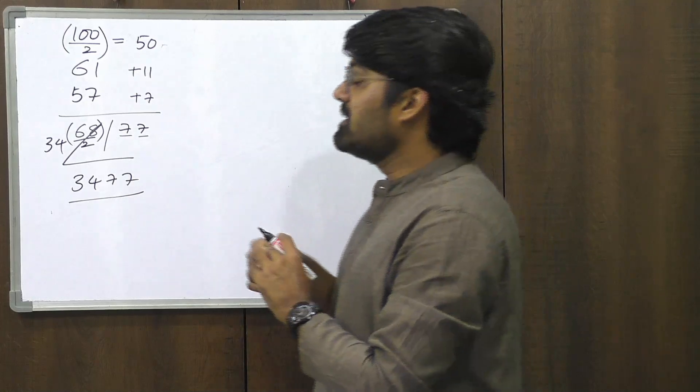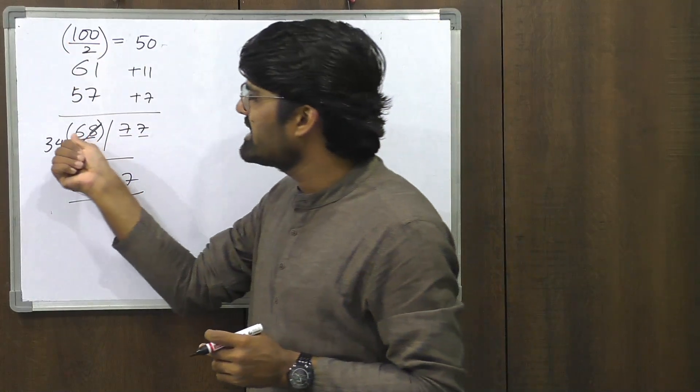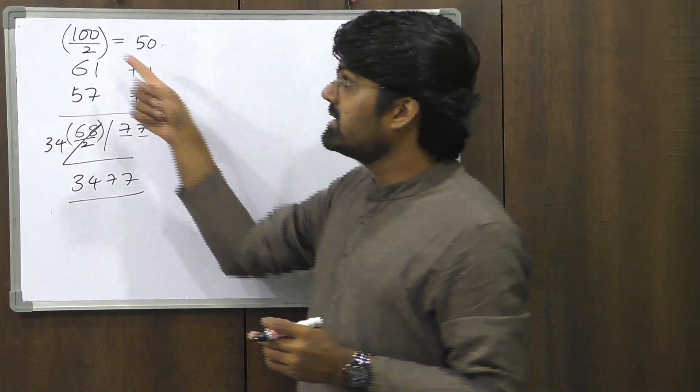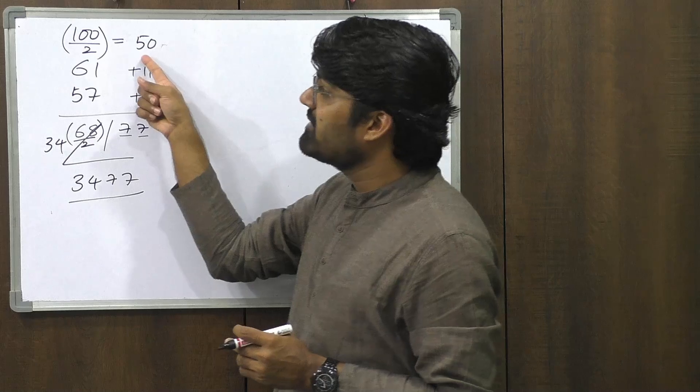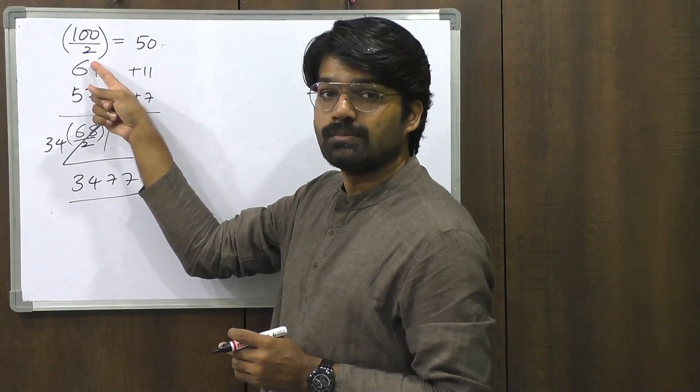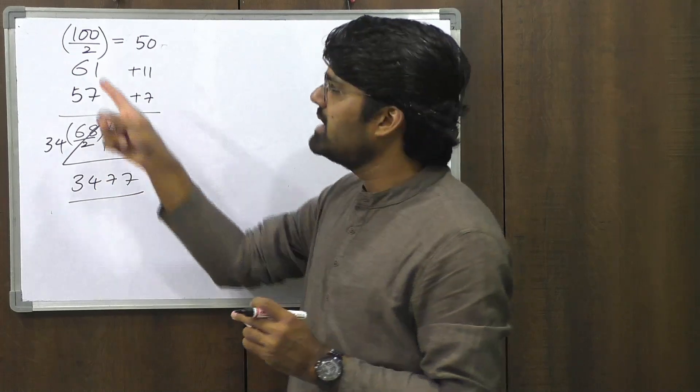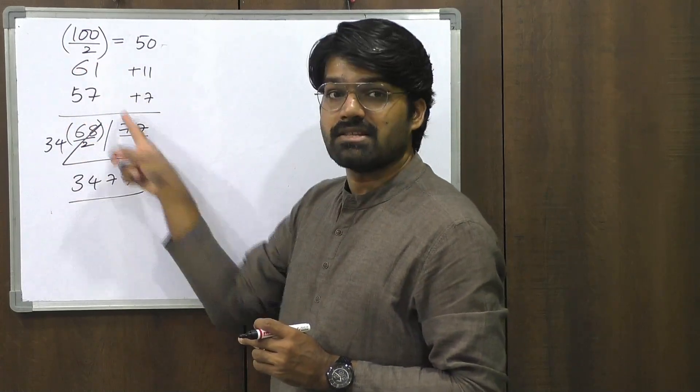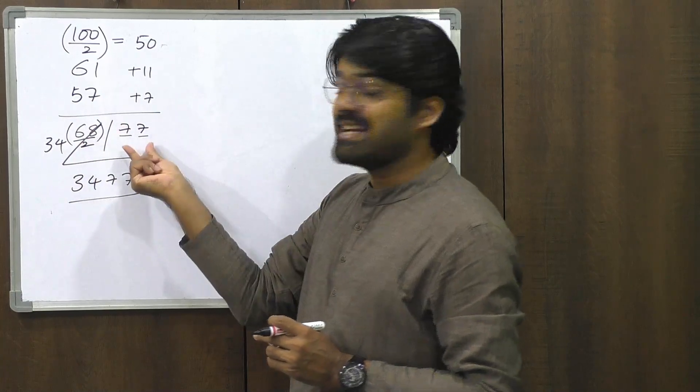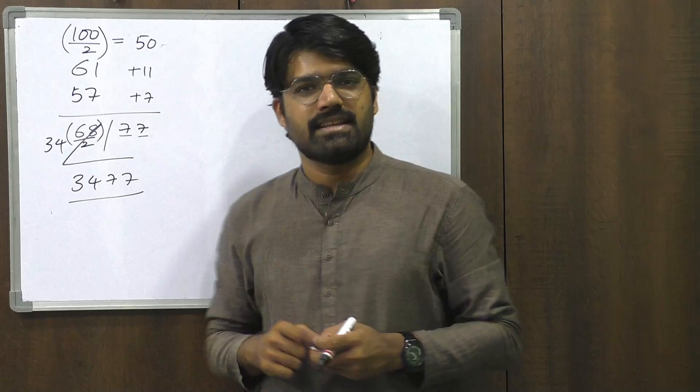I repeat, if the base were simply 100 without any division or multiplication, we would take the answer as 6877. But here the base was not 100. The base working base was 50. And that was arrived at by dividing 100 by 2. So you need to divide the first part of the answer by 2. Basically any operation that you perform here has to be applied on the first part of the answer on the left hand side of the answer. The right hand side remains unimpacted. That does not change. So 3477 is the answer.